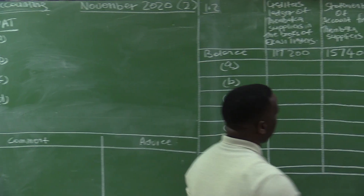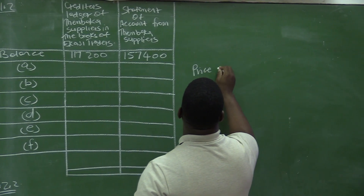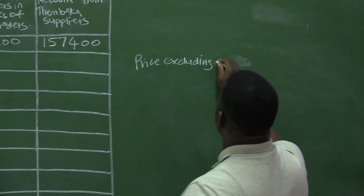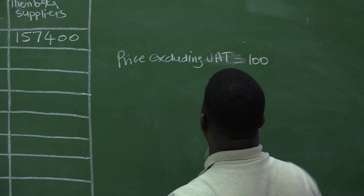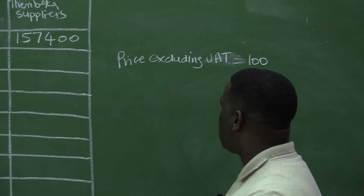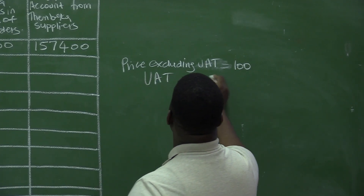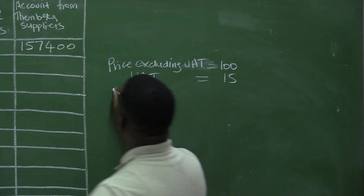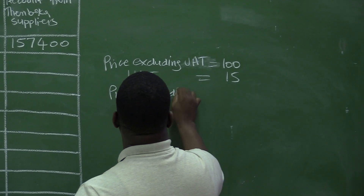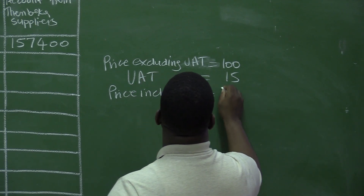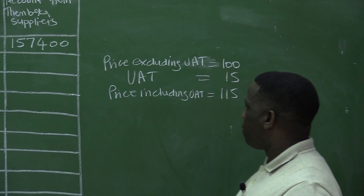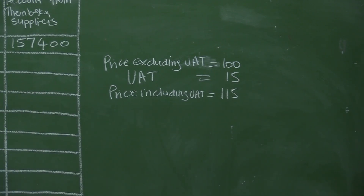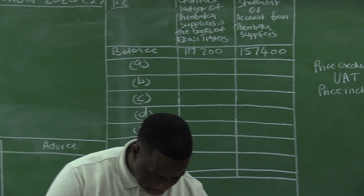If the price excluding VAT is equal to 100%, and VAT in South Africa is currently charged at 15%, then the price including VAT will be equal to 115%. So: price excluding VAT is 100%, VAT is 15%, and price including VAT is 115%.